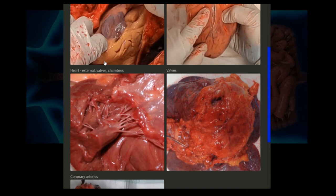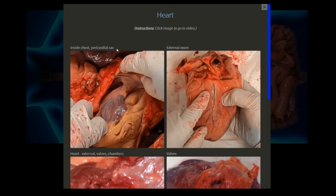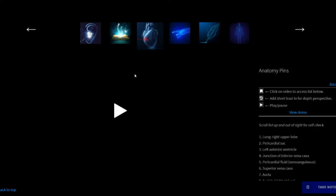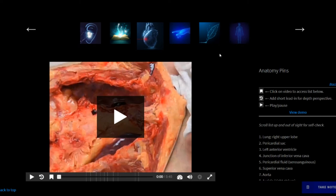For example, heart with valves, heart with external exam or pericardial sac, and so on. Each picture clicks you to a video and typically one that has anatomy pins. This allows you to pinpoint the anatomic structures you may be interested in.